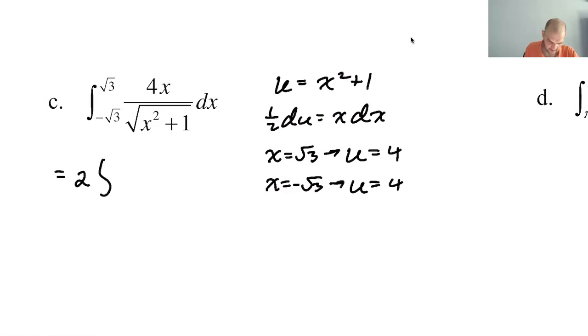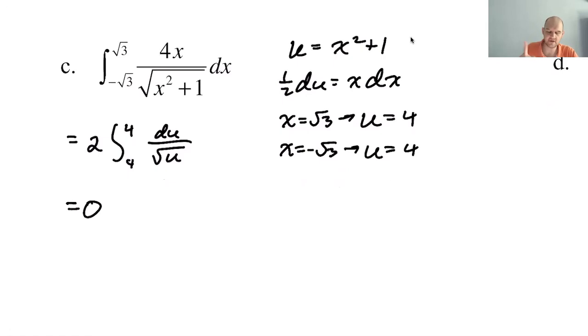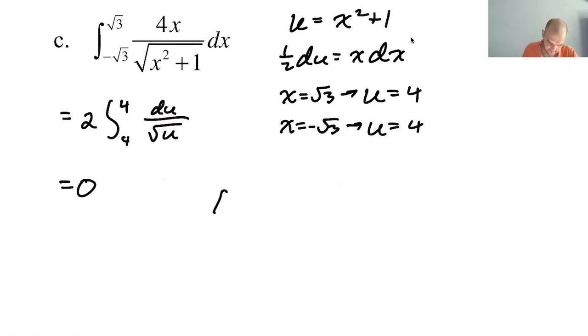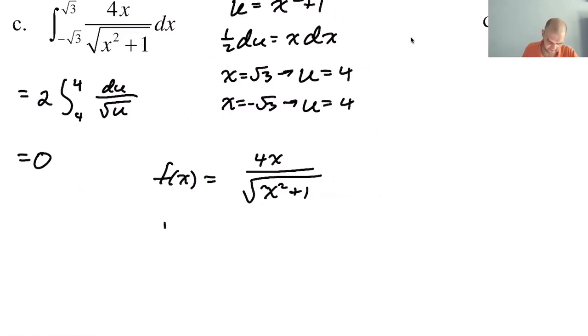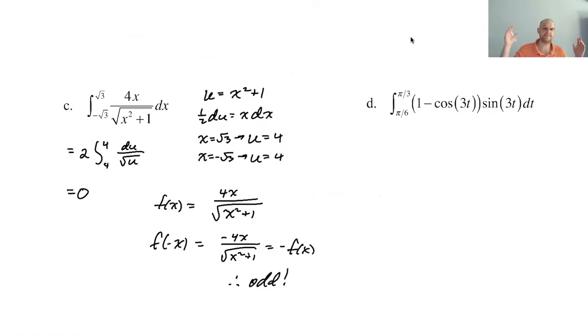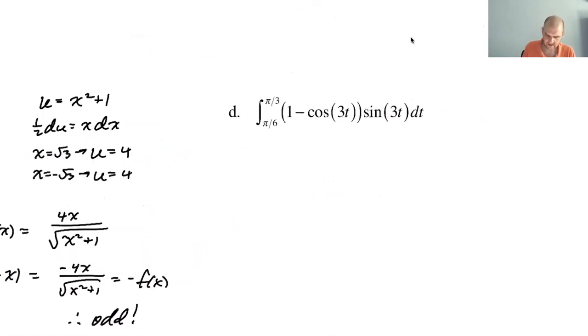Look at what our u-substitution does to us. So there's a 4 and a 1 half, so you get 2. The integral from 4 to 4, that's crazy, of du over the square root of u or something. This is definitely 0. But a better observation would have been that for f of x, I've got to be on the lookout for this. It was a good move when I decided for kind of laziness when I decided to change everything. f of negative x is negative 4x over radical x squared plus 1, which is the negative of f of x, so it's odd. Be on the lookout for odd functions, because odd functions with symmetric bounds, that's what I should have looked out for.